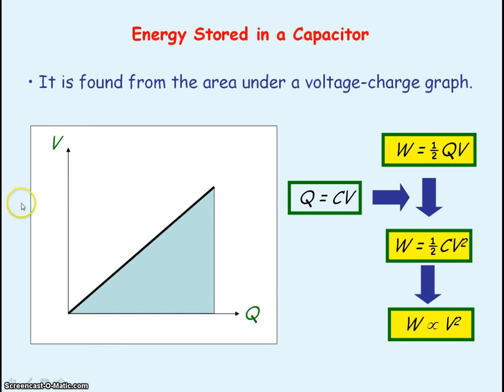And that's because if we double the voltage across the capacitor, the charge stored on the capacitor will also double. So you have a double effect on the charge stored and the voltage. So you'll have four times the energy stored.